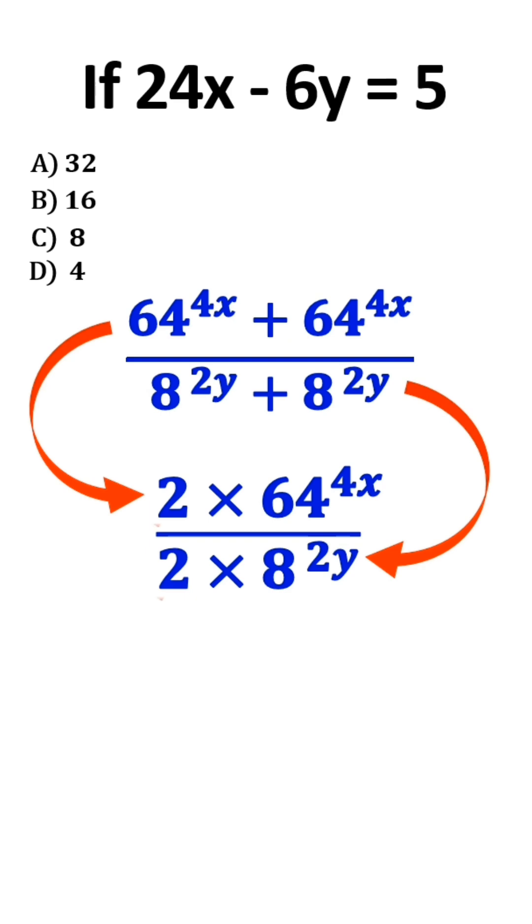Now, these damn 2's cancel each other out. And we are left with 64 to the power of 4x over 8 to the power of 2y.